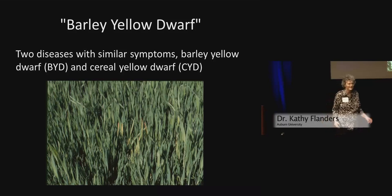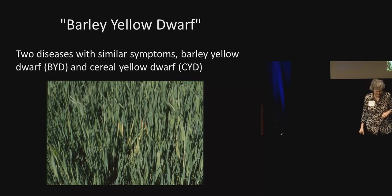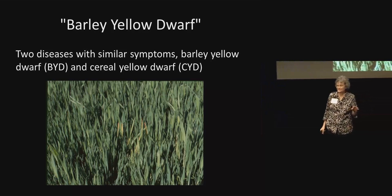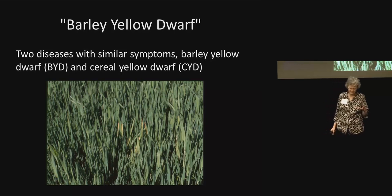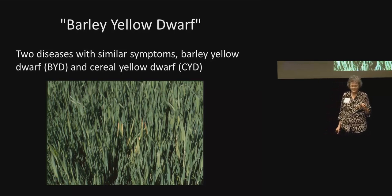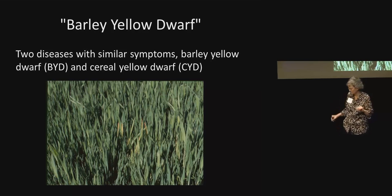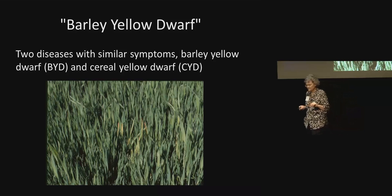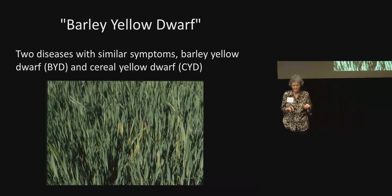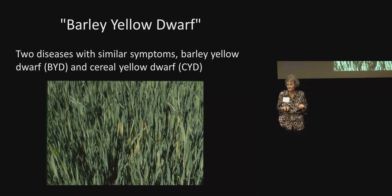Barley yellow dwarf — I kind of put it in quotes — it's really two different diseases. They more or less have the same symptoms within the wheat. It also attacks oats and some other crops, but I'm going to focus on wheat. One is called cereal yellow dwarf, and another is called barley yellow dwarf. I'll try to refer to them as yellow dwarf diseases. The symptoms are the same, the management is the same, but the virologists insist it's actually two.